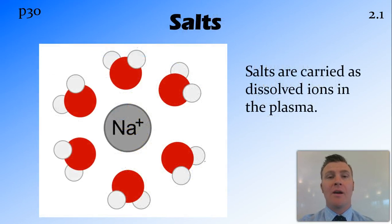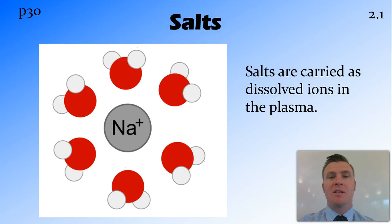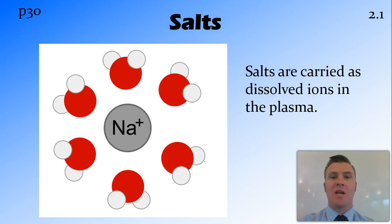Salts are carried around the body as dissolved ions. For example, when sodium chloride dissolves in the plasma, it dissolves into the sodium ion and the chloride ion, and they are able to hitch a ride on the plasma and move around the body in that way.